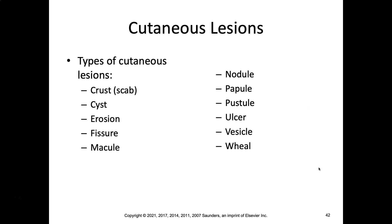Now, cutaneous lesions. Things that can happen in the cutaneous layer include: crust or scab, cyst, erosion, fissure, macule, nodule, papule, pustule, ulcer, vesicle, and wheal. The last one is spelled W-H-E-A-L and is pronounced 'wheel' — it's not the wheel of a car, it's the wheal of a cutaneous lesion.